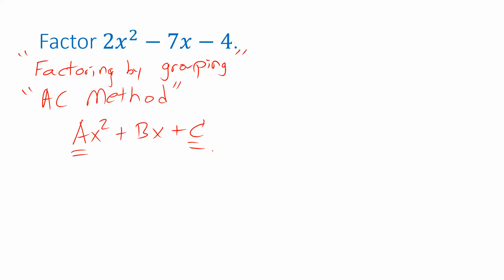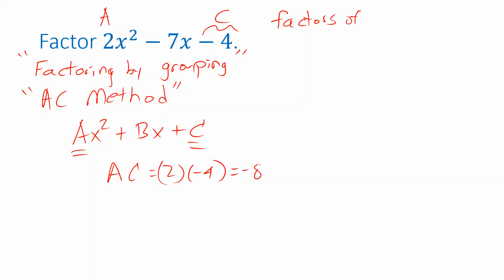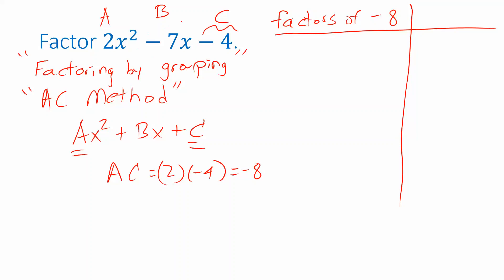In this problem, a is 2 and c is negative 4 — don't forget that minus sign — so a times c is negative 8. We're going to look for factors of negative 8. This starts out similar to the process we used before; it will deviate a little bit later. Just like before, we want the sum of those factors to equal the middle coefficient b, which is negative 7.